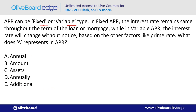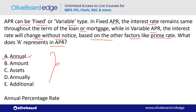APR can be of fixed or variable type. Fixed APR means the interest rate remains the same throughout the term of the loan or mortgage. Variable APR means the interest rate can change without any notice based on other factors like the prime rate. What does 'A' represent in APR? A is Annual — option A. APR is Annual Percentage Rate.